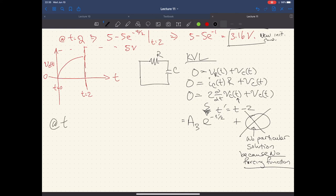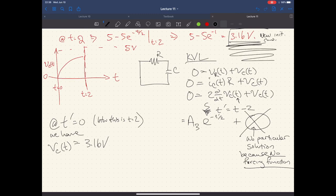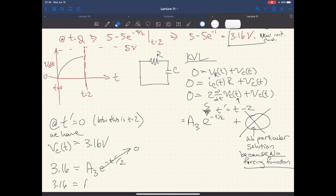Our initial condition is that at T prime equal to zero, which is by the way, this is T equals two, we have V_C(t) is equal to 3.16 volts, which we had from up here. Okay. So now this acts as a push for our system here, e to the minus T prime over two. And so now we have at zero, 3.16 is equal to A_3.